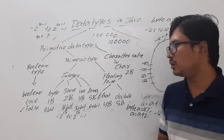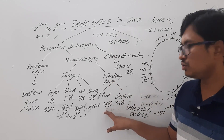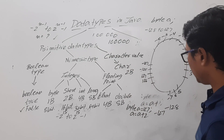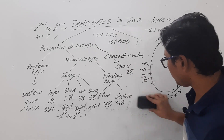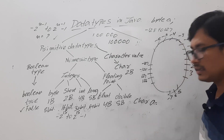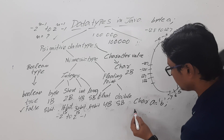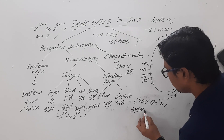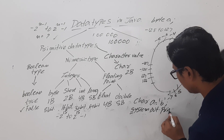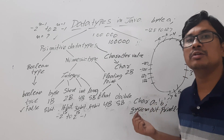Float occupies 4 bytes, double occupies 8 bytes, and character occupies 2 bytes. To declare a character: char a = 'b'. Then system.out.println(a) will display the character b. Note that in the code, B here would be capital.